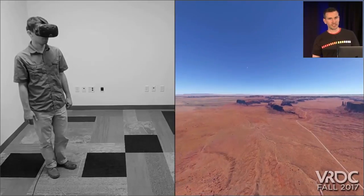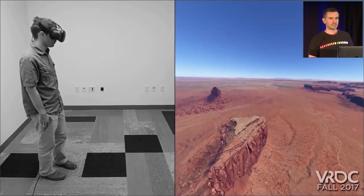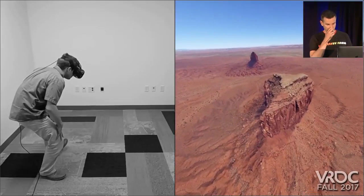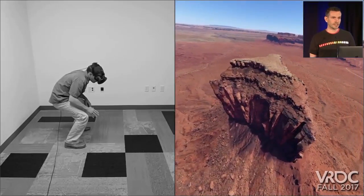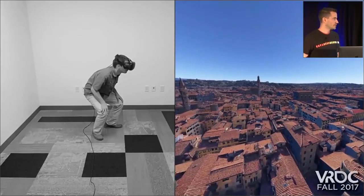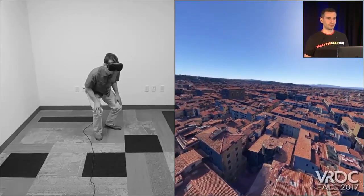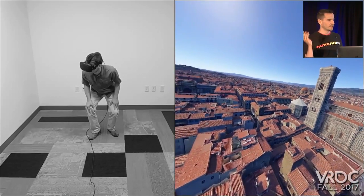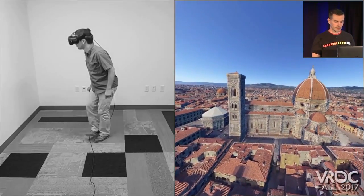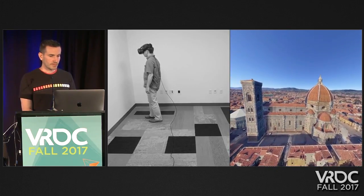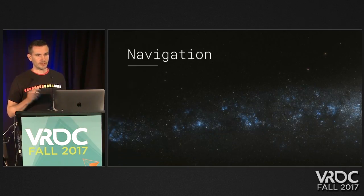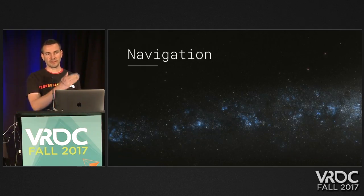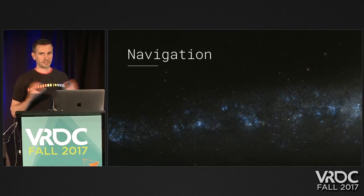The first thing we did when we got a prototype Vive — we were one of the first companies to get it with the tag room demo — was put people in it. Our founders Larry and Sergey Brin and J.J. Abrams immediately wanted to go further than the limit of the three-meter by three-meter room. They wanted to go down the street or over the mountain and really explore around.